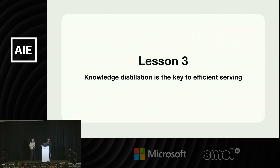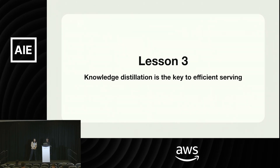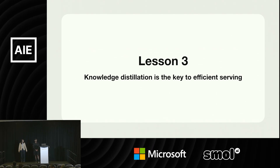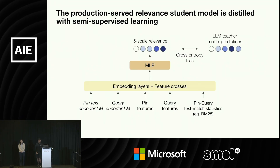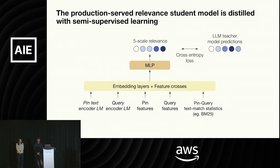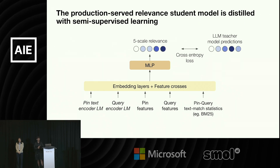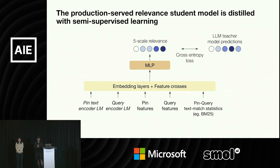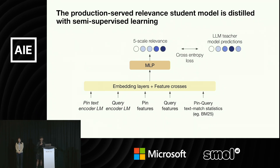Now I'll hand over to Mukunda to talk about how we use knowledge distillation to productionize this model. So now we have a good relevance model, but how do we actually scale this up without bankrupting Pinterest? Usually the answer is knowledge distillation into smaller models. This is the production-served student model that we distilled from the teacher model using semi-supervised learning. The student model is trained to predict five-scale relevance scores using the soft scores produced by the teacher model, with data produced through a semi-supervised learning setup.